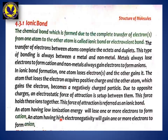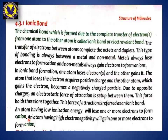An atom having low ionization energy will lose one or more electrons to form a cation. Ionization energy is the energy required to remove an electron from an atom — the energy used to separate an electron from an atom, or to convert an atom into an ion. When an atom has low ionization energy, very little energy is needed to remove its electron, so it easily gives away its electron. Atoms with low ionization energy can easily lose one or more electrons and become cations, acquiring a positive charge.